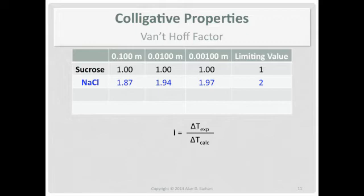Okay, so the limiting value is one if it's a non-electrolyte. If it's an electrolyte, it's equal to the number of expected ions. So if it's an ionic compound, it's just how many cations and anions are in there. Sodium chloride too. But what's going on with the concentration effect?